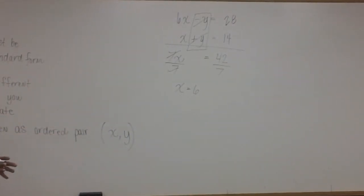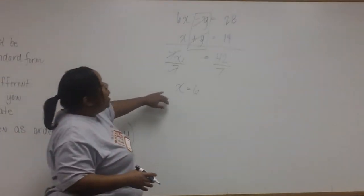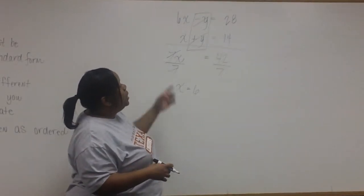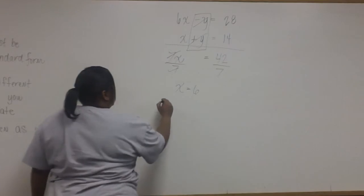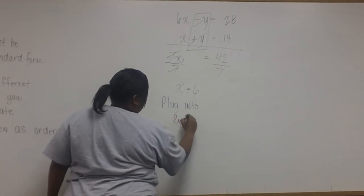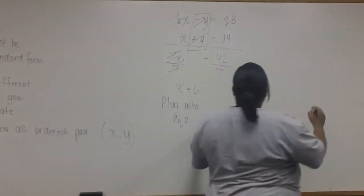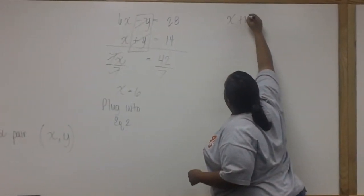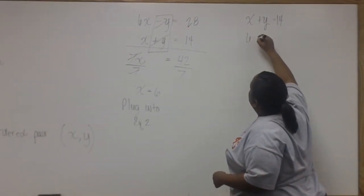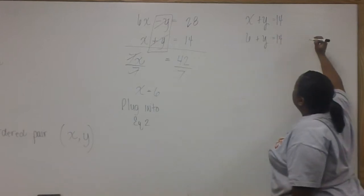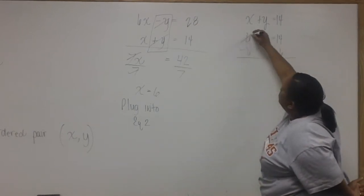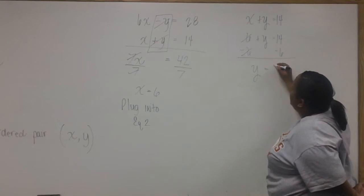Now that we have x, we can find y. And we can find y by plugging back into either of these equations. It doesn't matter which one we plug back into. I'll choose equation 2. So we're going to plug this into the second equation. So in place of x, we now have 6. And to solve for y, we'll subtract 6 from both sides. And we find that y is equal to 8.